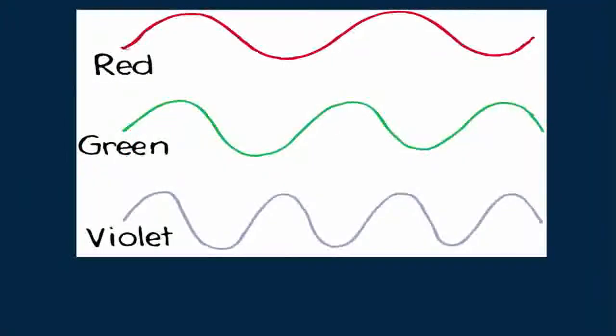The lowest frequency visible light appears red, the medium green, and the highest frequency appears violet. These waves are nearly twice the frequency of red light.